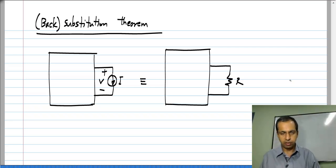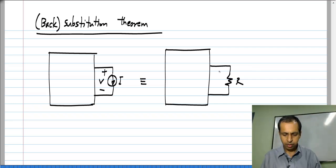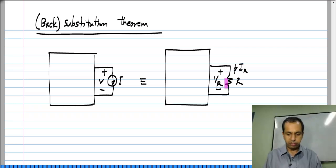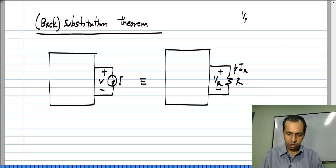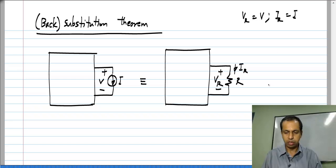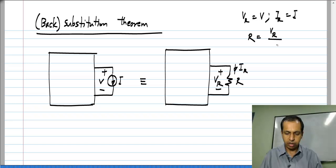What should be the value of the resistor? Let us say the voltage across the resistor is V_R and the current is I_R, and we want V_R and I_R to be exactly the same as V and I. So we want to substitute this current source with the resistor without altering any voltage or current in the circuit. Therefore, V_R must equal V and I_R must equal I.